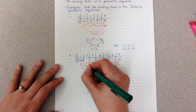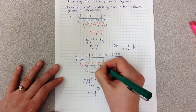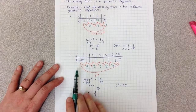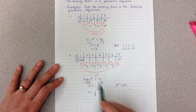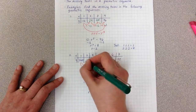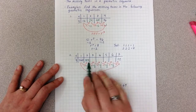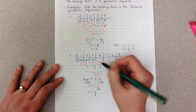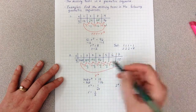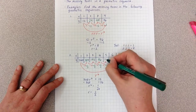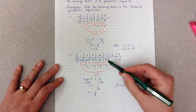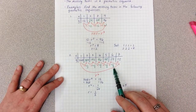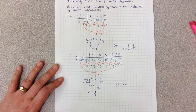Going back to the table, each R is 1/2, so I multiply each previous term by 1/2 to get the next. 768 times 1/2 is 384, times 1/2 is 192, times 1/2 is 96, times 1/2 is 48, times 1/2 is 24. And just to double check, 24 times 1/2 is indeed 12.